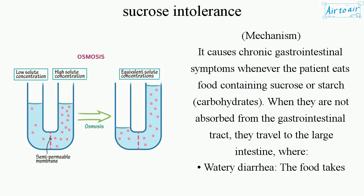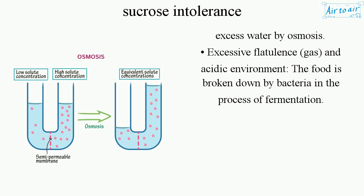The mechanism causes chronic gastrointestinal symptoms whenever the patient eats food containing sucrose, starch, or carbohydrates. When they are not absorbed from the gastrointestinal tract, they travel to the large intestine, where the food takes in excess water by osmosis, causing watery diarrhea.